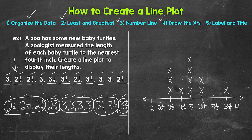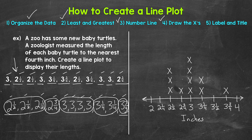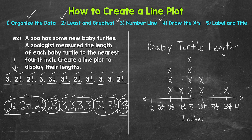Moving on to our last step: we label and write a title. The title and label are very important for someone else looking at this — they help a viewer understand the line plot and the data being presented. The numbers on the number line represent inches, so we write 'inches' below. Then we need a title that explains what the line plot is about — something like 'Baby Turtle Lengths.' And that's our label and title. That's our line plot — we are done.